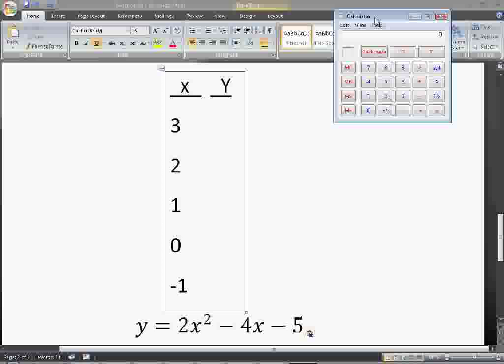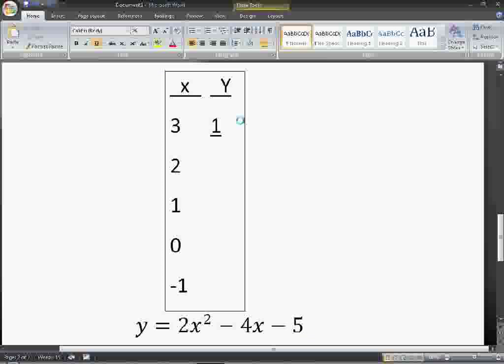If we put 3 through the equation, 3 times 3 times 2 equals 18. Then you're going to do 18 minus 4 times 3, which is 12, minus 5 equals 1. So, for 3, you got 1.